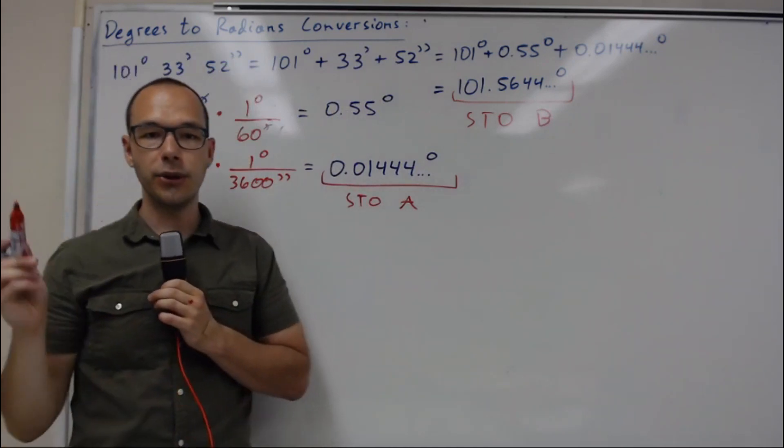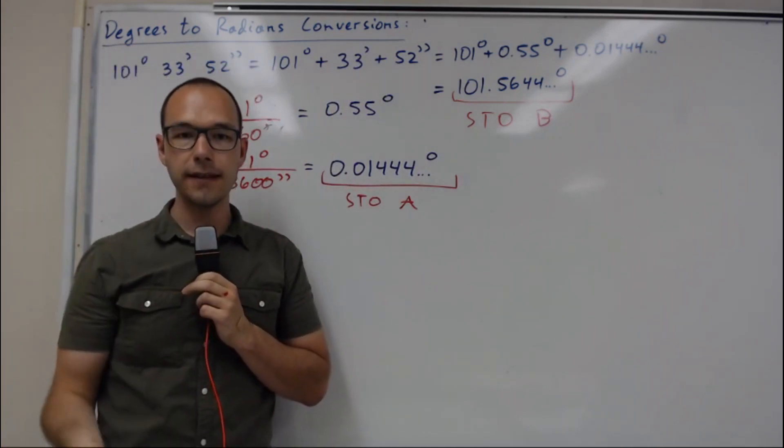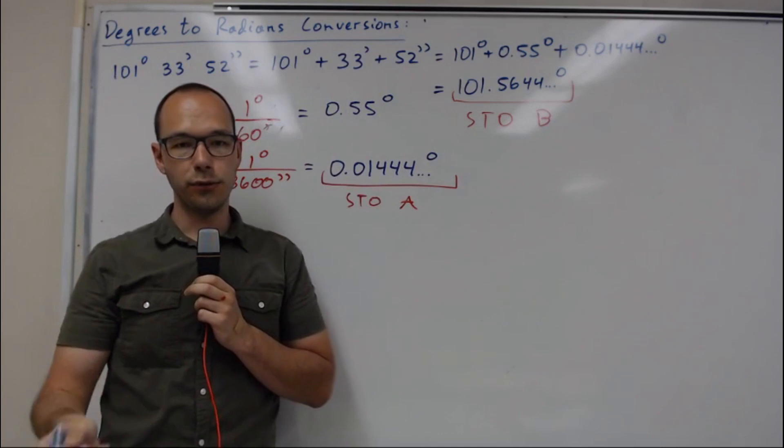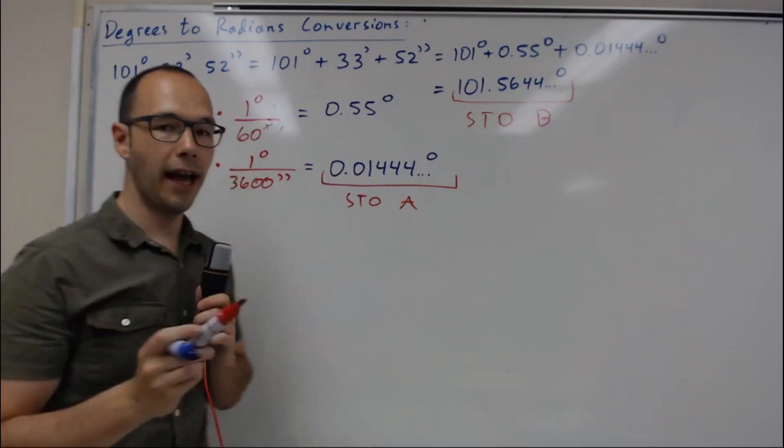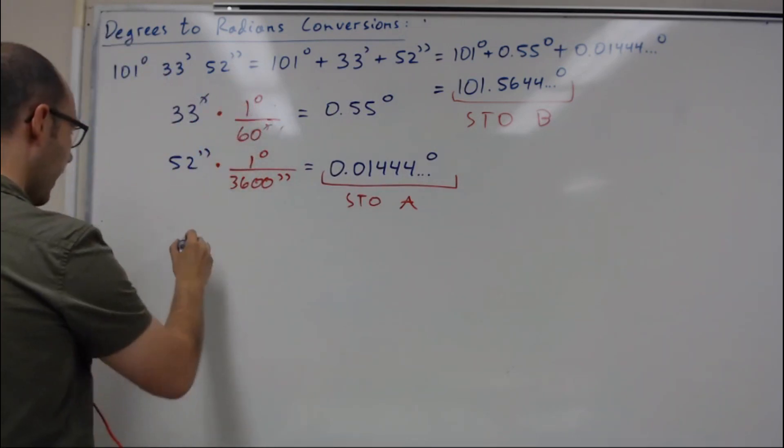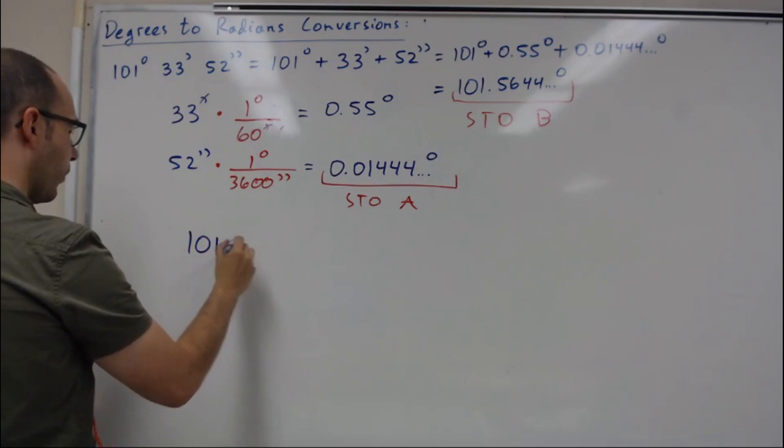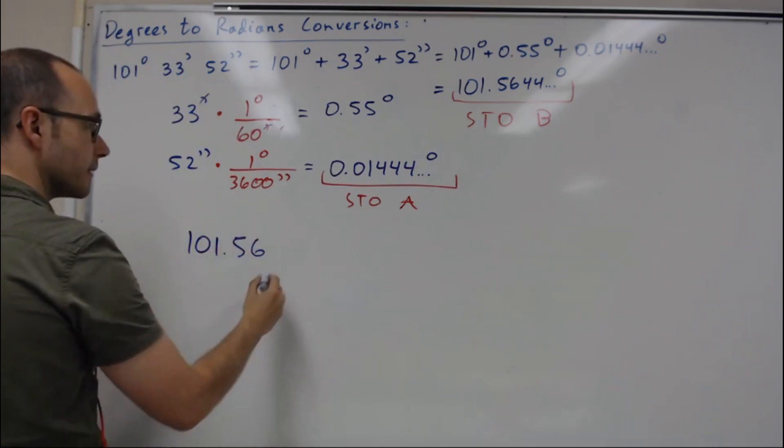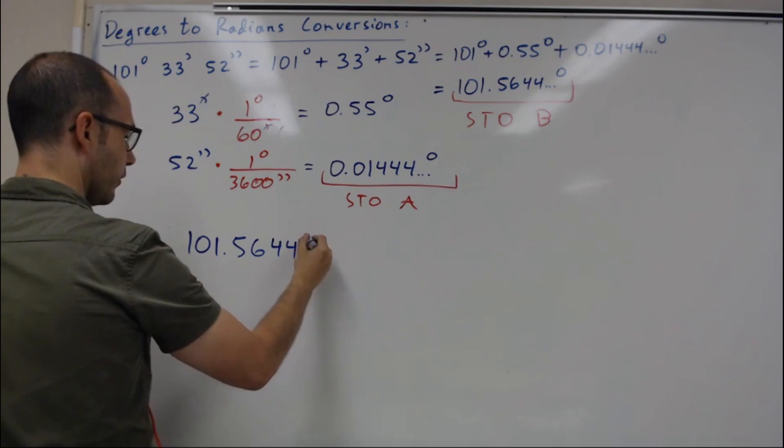So now you have an angle in degrees and you want to convert that into radians. You're going to have to rewrite that angle here, 101.5644 degrees.